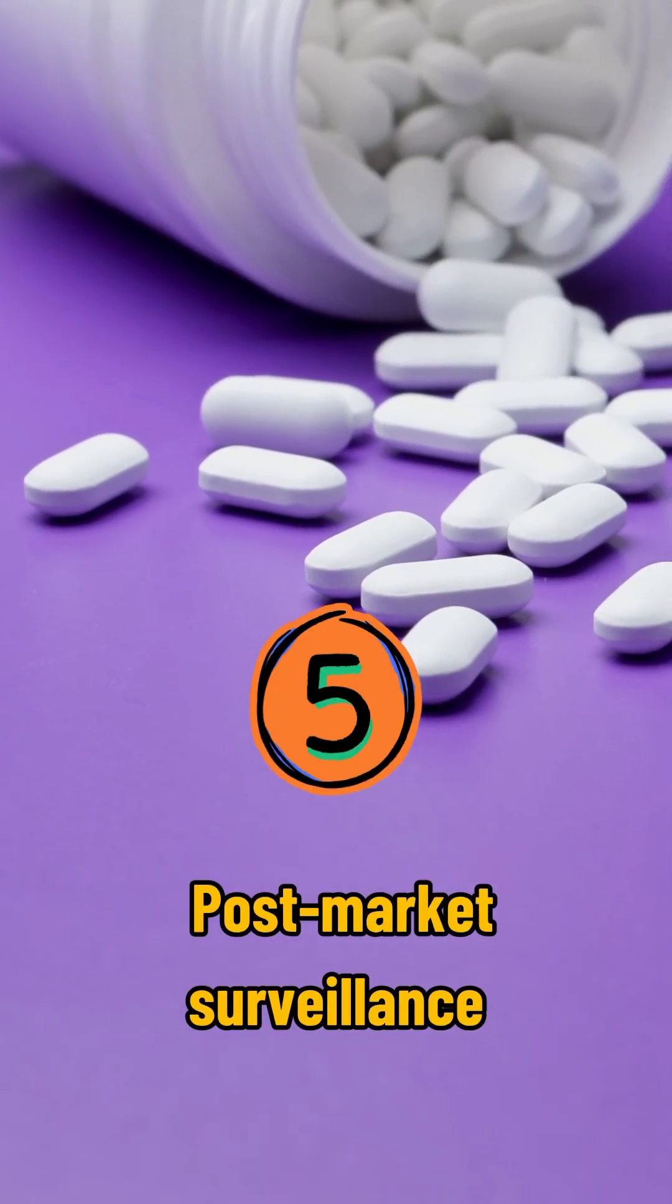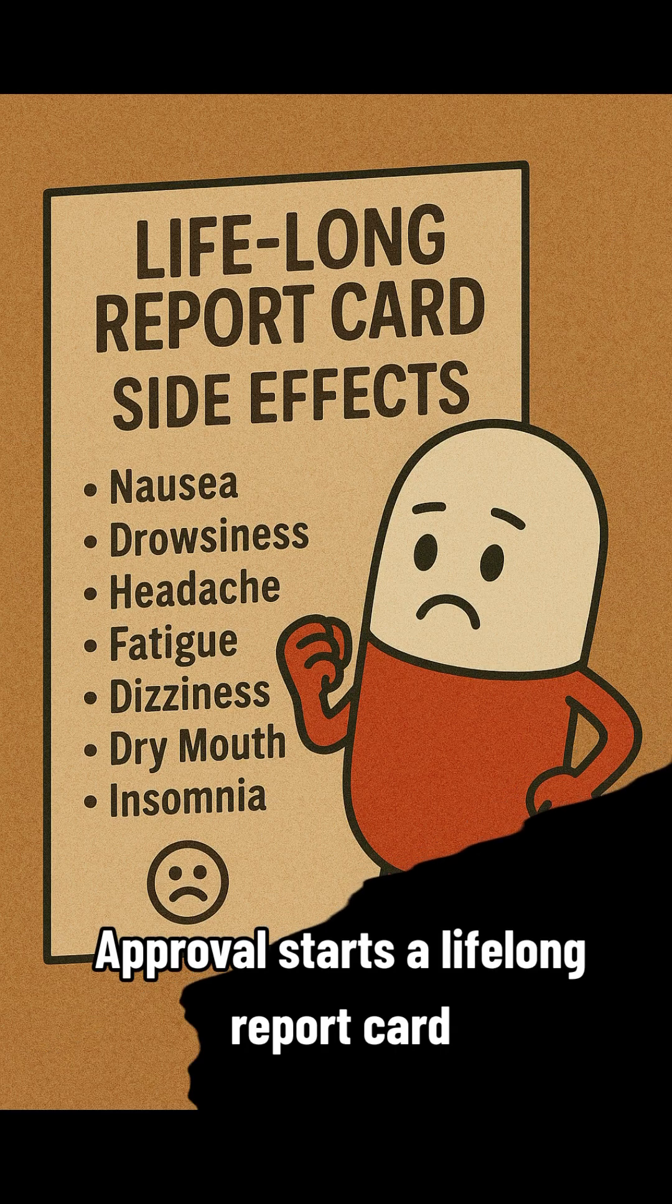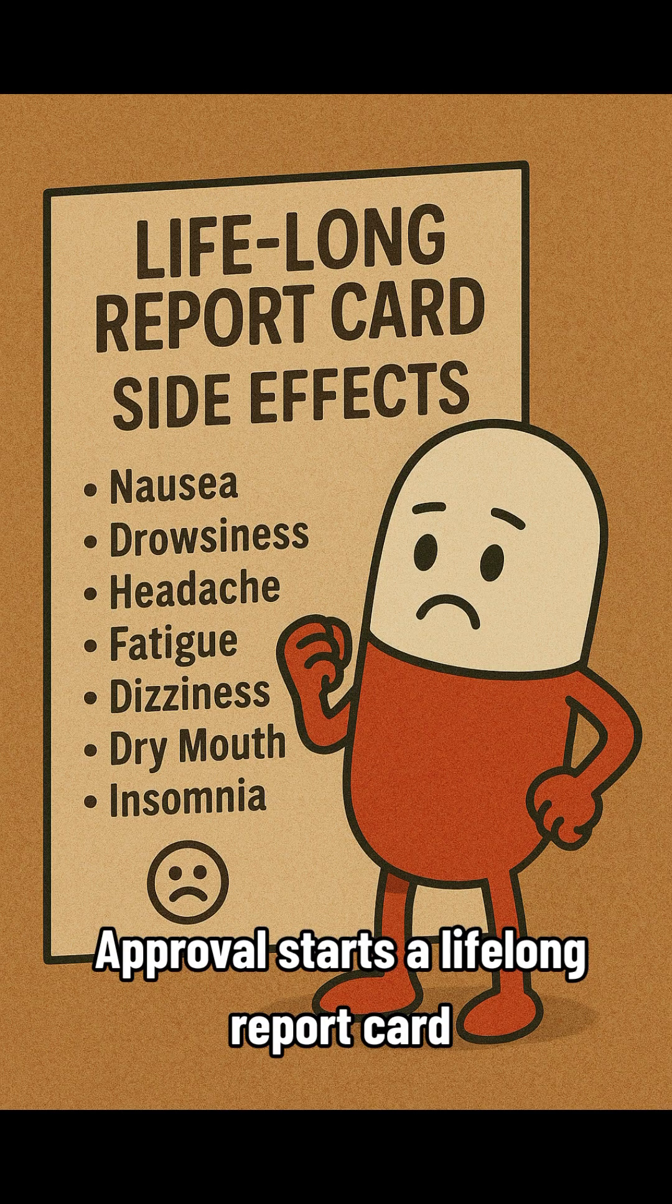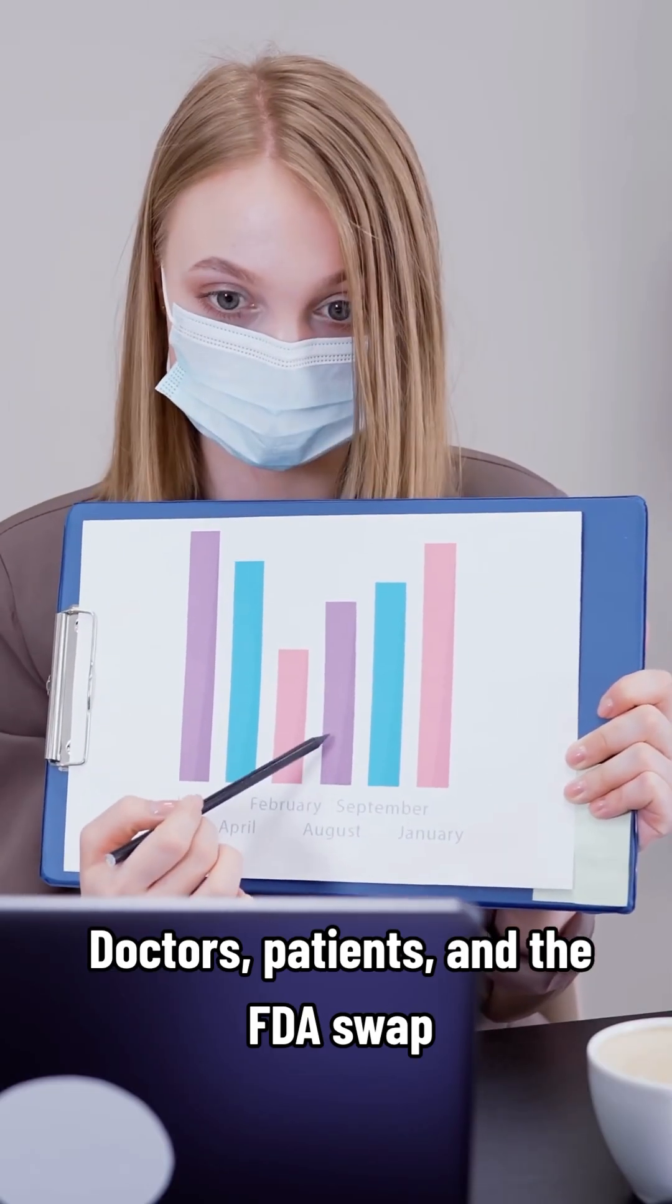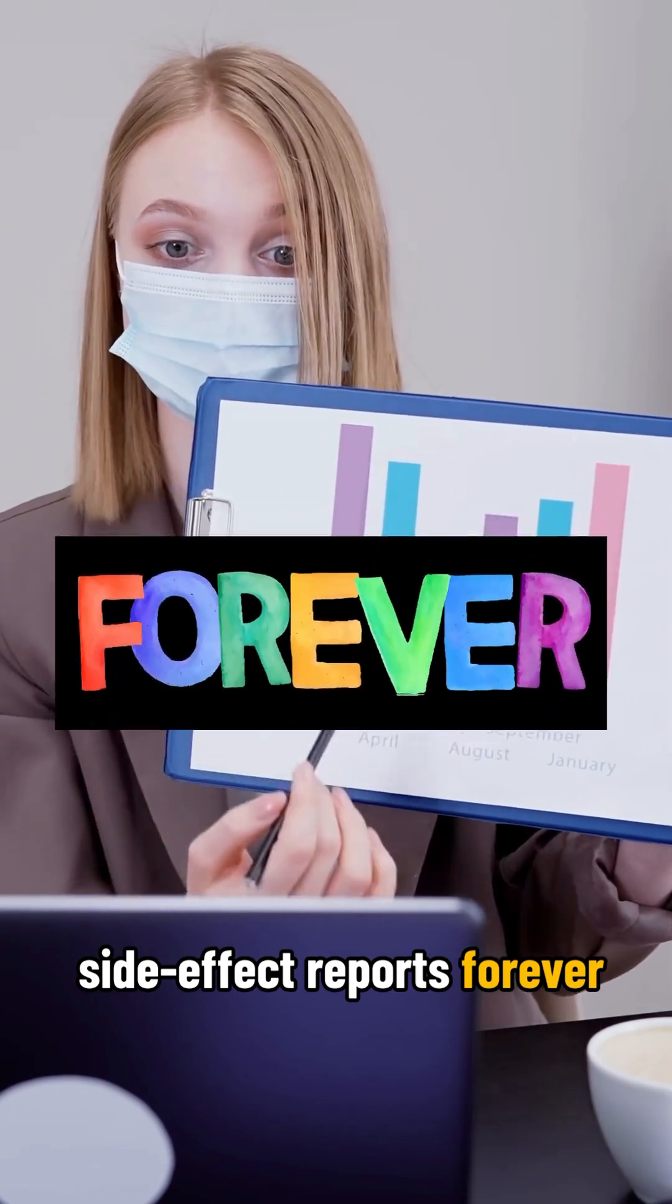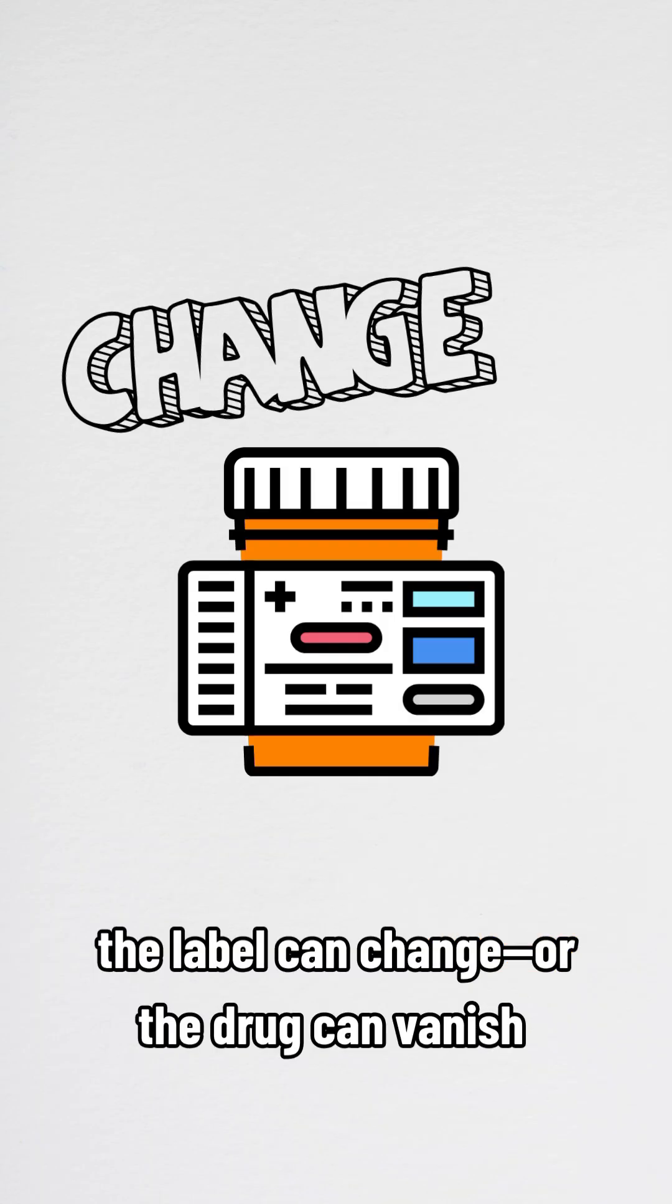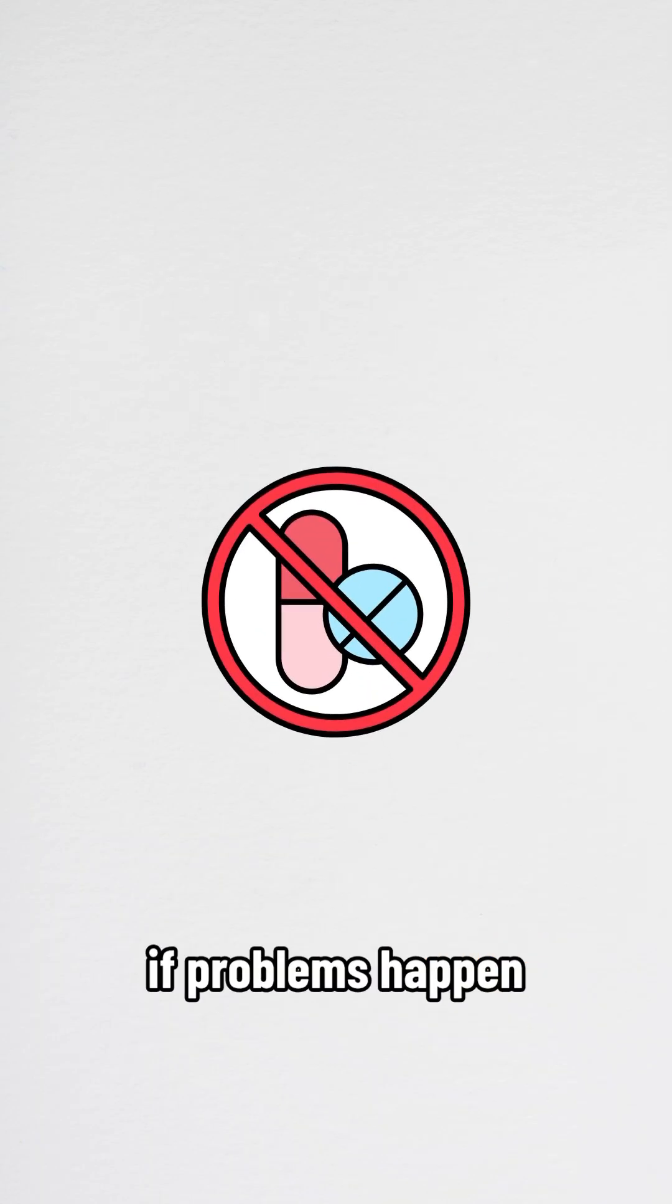Step 5. Postmarket Surveillance. Approval starts a lifelong report card. Doctors, patients, and FDA watch side effects and report forever. And the label can change or drug can vanish if problems happen.